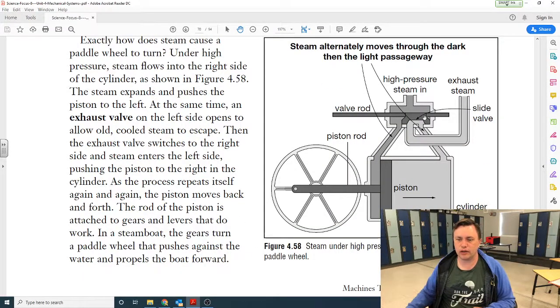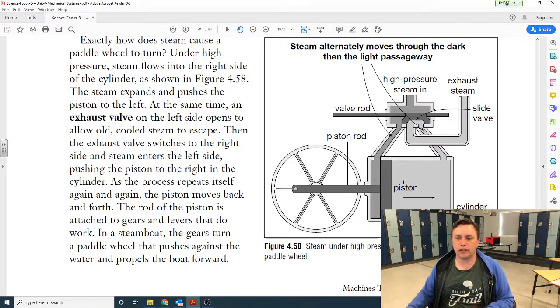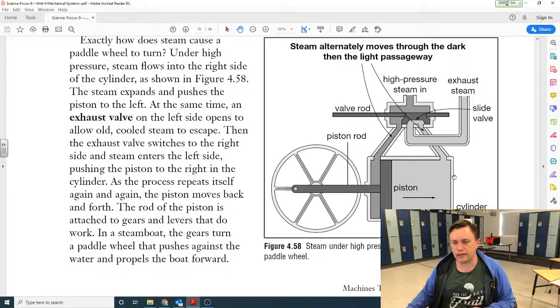Here's another image of that valve rod going back and forth as it allows steam to enter and escape depending on which side is working. The steam is coming in here and going down, and it pushes the piston back this way. As it pushes the piston back this way, it'll push the cooler exhaust out.